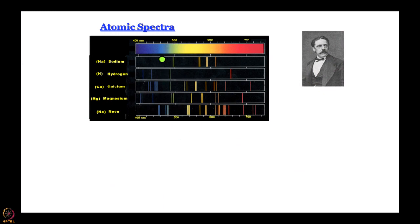What you see here is a collection of emission spectra of several atoms depicted in the classical way. You have a source - the emitter - light that is emitted falls on a grating or a prism which disperses the light, and that falls on a photographic plate. So different regions of the photographic plate record intensities of different light.